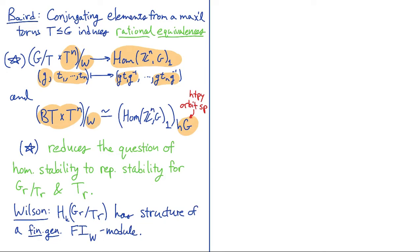There, what you find is BT, classifying space of the maximal torus, cross T to the n, modding out the diagonal action of the Weyl group. So this first statement basically reduces the question of homological stability for these spaces to just studying separately these pieces. And really, of course, we're looking at some sequence as the rank of the Lie groups increase. Really, you can reduce down from T to the n to just understanding a single copy of the torus as the ranks increase.